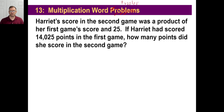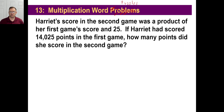I'm going to have some editor check these things. So let's try one of these multiplication word puzzles. Harriet's score in the second game was a product of her first game's score and 25. If Harriet had scored 14,025 points in the first game, how many points did she score in the second game? The score in the second game was a product — which means multiplication — multiplying her first game's score and 25. So you're going to go 14,025 times 25. That's how you set it up.